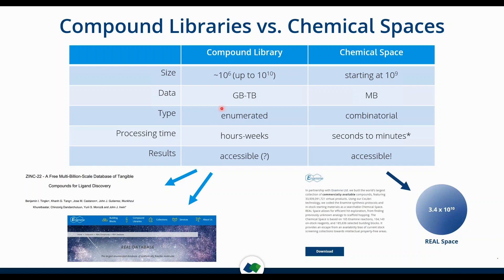The REAL database is an enumerated version of what Enamine can synthesize — 12 zip files, each of 13 gigabytes in zip format, so you can imagine how big the unpacked data would be compared to the space file. Therefore, compound libraries are enumerated: each molecule has its own entry in the database, whereas combinatorial spaces only include building blocks and chemical rules to combine them, featuring almost no compounds except for the building blocks themselves.